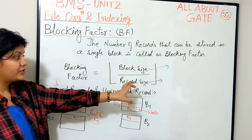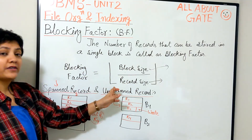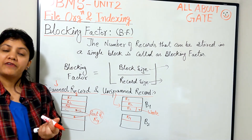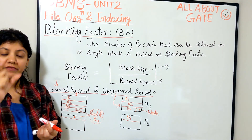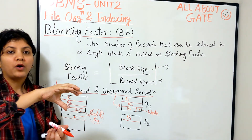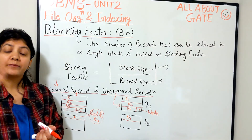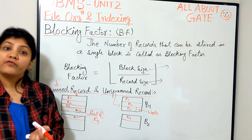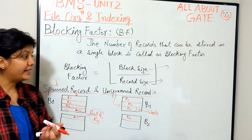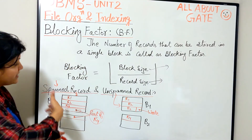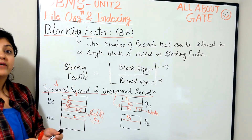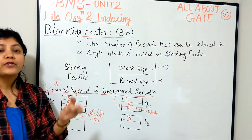That is why we take the floor function in the blocking factor formula — because we consider unspanned organization almost always. While making calculations, you will take the floor function and ignore the fractional record, since that fraction will go into the next fresh block only. This covers the basic understanding of these terms. In the next video, I will explain sparse and dense indexes.